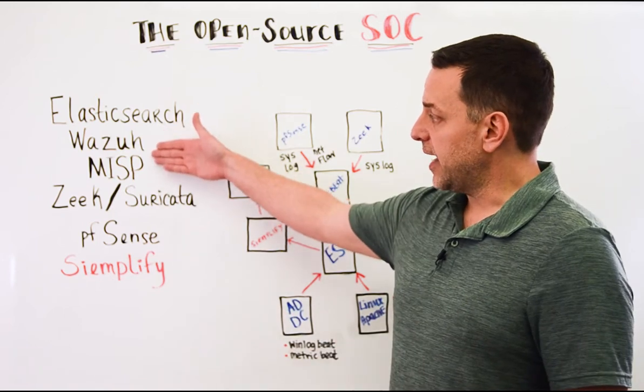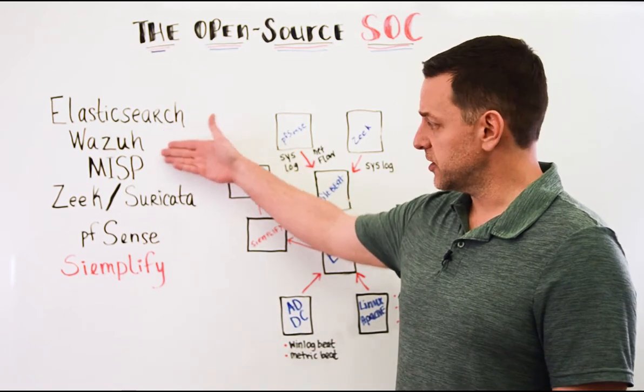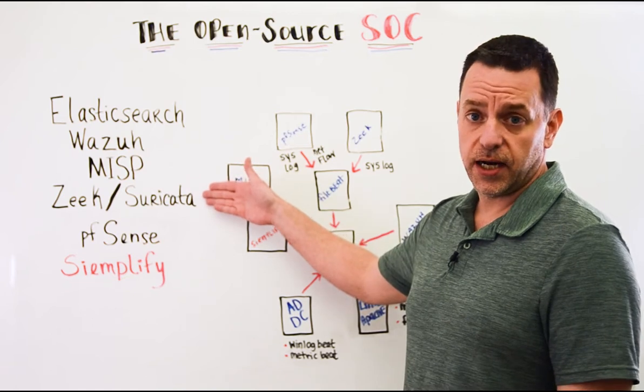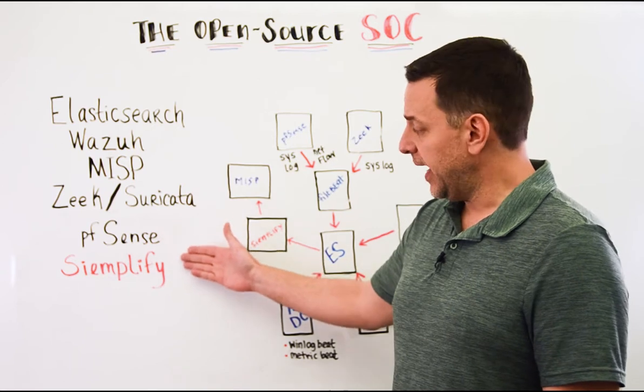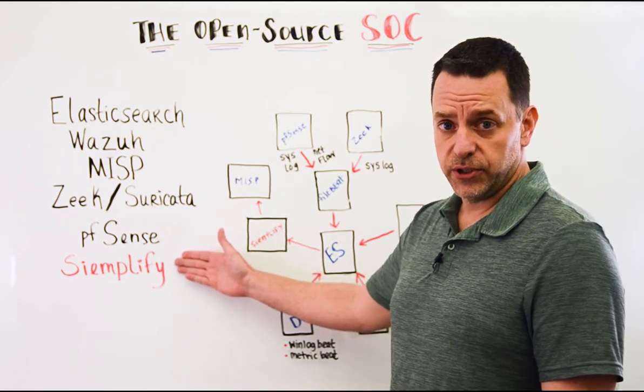Along with that we've got MISP as a threat intelligence source. We've got either Zeek or Suricata as our IDS. We're running PFSense as a firewall and we also have our Simplify Community Edition.